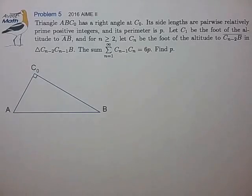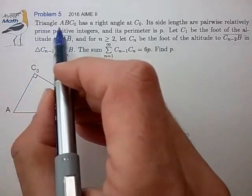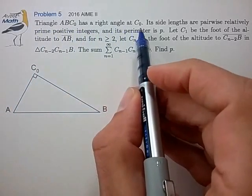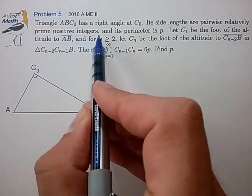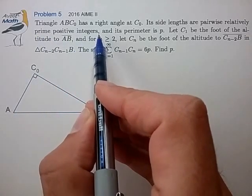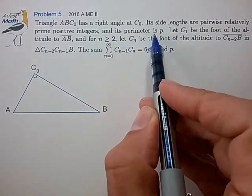Hi, this is problem 5 from the 2016 AIME II, a good example of using the generator functions for reduced Pythagorean triples. So let's see what we have. Triangle ABC0 has a right angle at C0. Its side lengths are pairwise relatively prime positive integers, which means this is a reduced Pythagorean triple, and its perimeter is P.